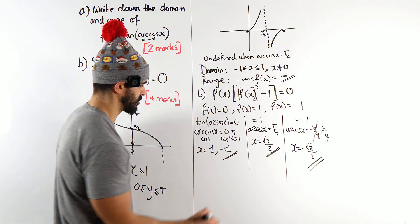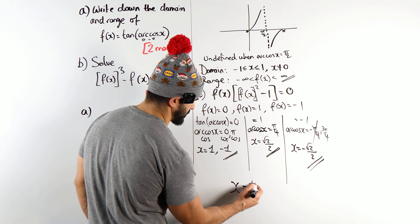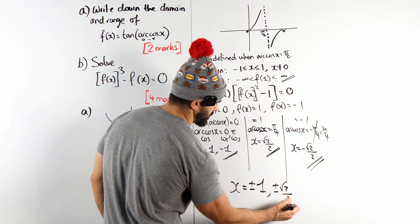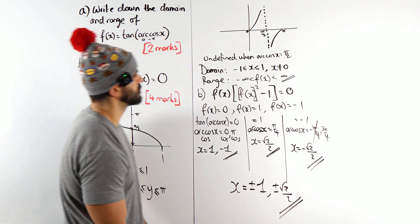So we have, oh, it's quite a nice solution. If I write it like this, x is plus or minus one, and plus or minus root two over two. And those are your solutions.